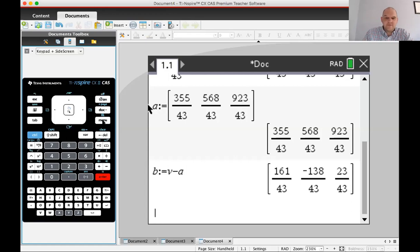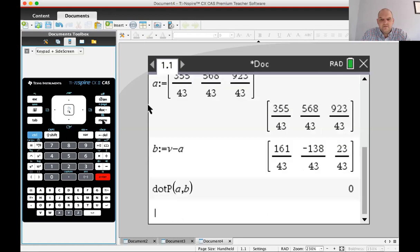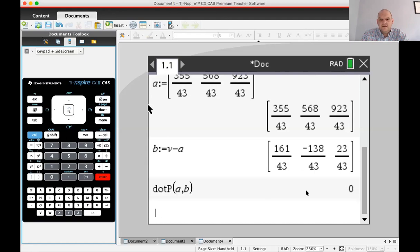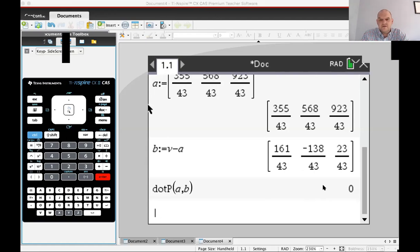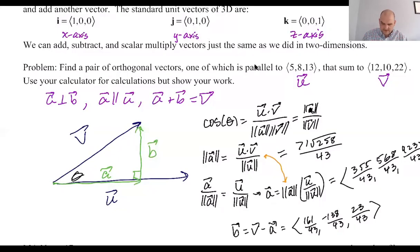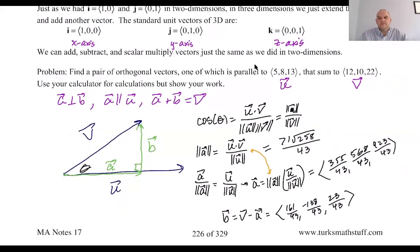The dot product of A and B is zero — confirmed orthogonal. I'm going to go back to sharing the iPad so you can see what I filled in. You should fill those in too. I hope you are finding this helpful and I will see you soon.